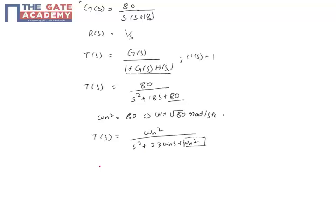The same way we have 2 zeta omega n is equal to 18. So which implies the damping factor will be 18 by 2 into root of 80, equal to 9 by root of 80.